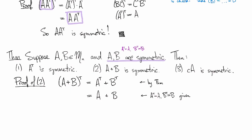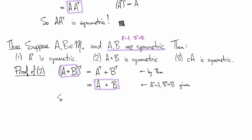And so this is because A transpose is A, B transpose is B, and that was given as part of our hypotheses. And now we look at these and go, oh, that thing that I took the transpose of back in the beginning, after taking the transpose I got the same thing back again. So that tells me that A plus B is symmetric, and I will leave it to you to check part three as well.